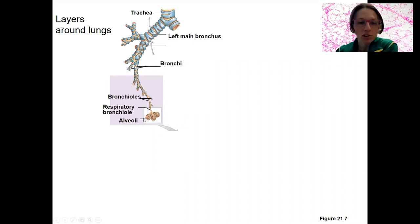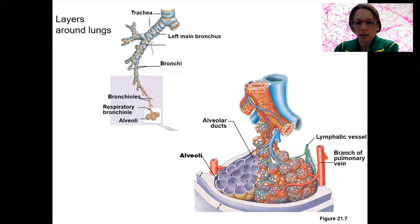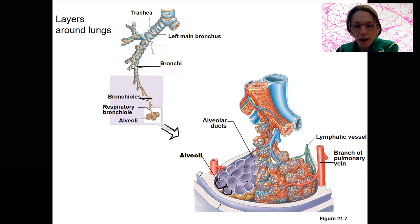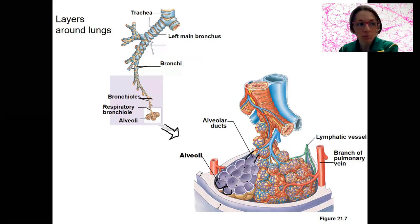We're now going to zoom in to this structure where the alveoli are and look at the layers surrounding the lung. Here are the individual alveoli where diffusion occurs, alveolar ducts that enter the alveoli. We've got blood vessels, lymphatic vessels, and smooth muscle surrounding those bronchioles. And then we've also got some layers surrounding the entire lung here.